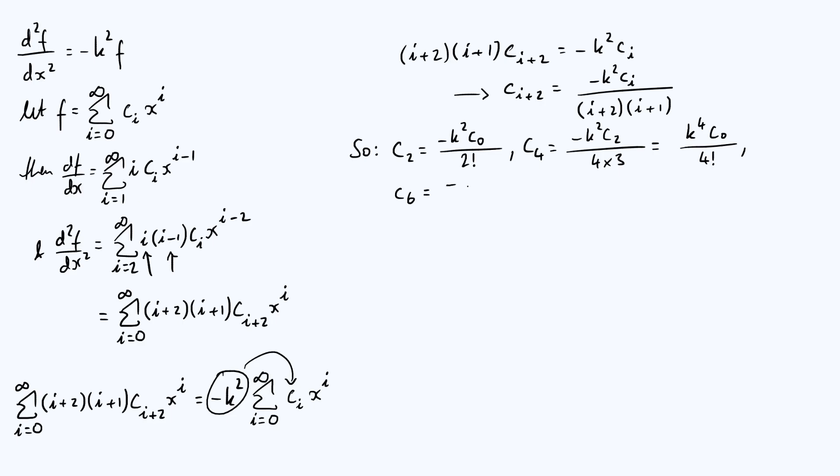So the c_6, coefficient of x to the power of 6 is going to be minus k² c_4. On the denominator from the recurrence relation, we are going to get 6 times 5. But then again, we can take our expression for c_4 from the previous line, sub it in to the numerator there, and you're going to get minus k to the power of 6 times c_0 divided by 6 times 5 times 4 factorial, which is 6 factorial. So there's this sort of pattern emerging in the coefficients of the even powers of x. So I'm just going to put dot dot dot to show that you can continue that pattern for c_8 and c_10 and so on.